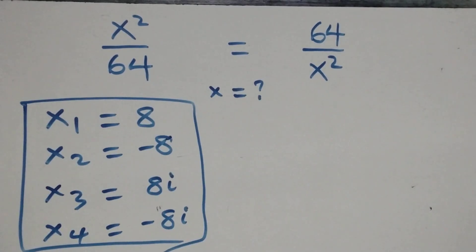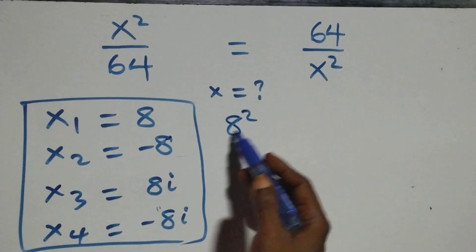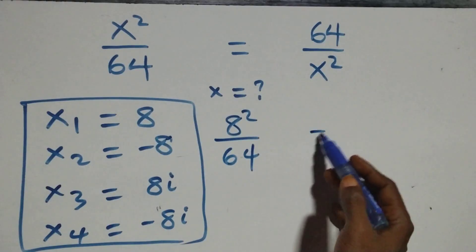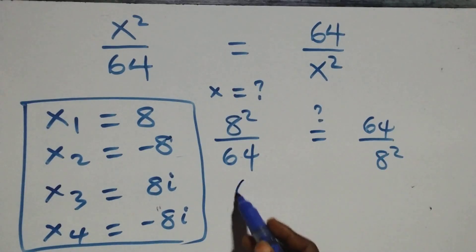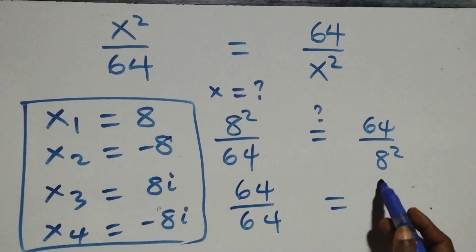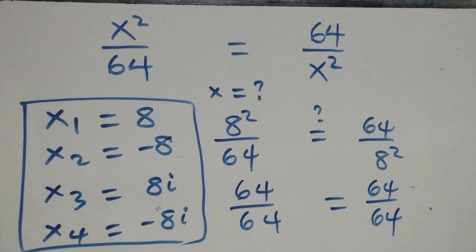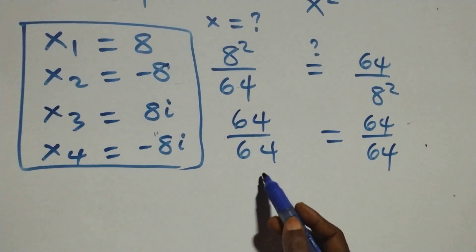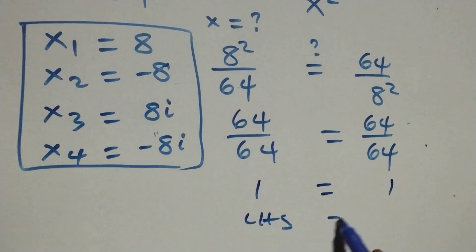Let's verify by substituting each value back into the original equation. When x equals 8, the equation becomes 8 squared over 64, which is 64 over 64, and on the right-hand side, 64 over 8 squared, which is also 64 over 64. Both sides equal 1, so left-hand side equals right-hand side. Therefore x equals 8 satisfies the given problem.